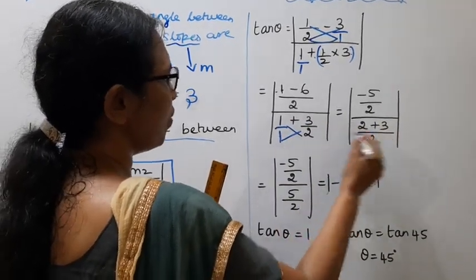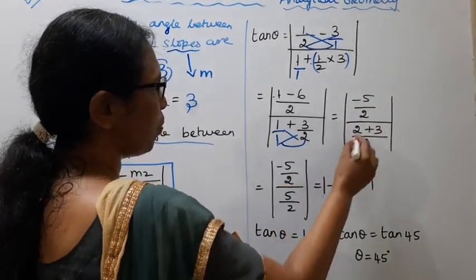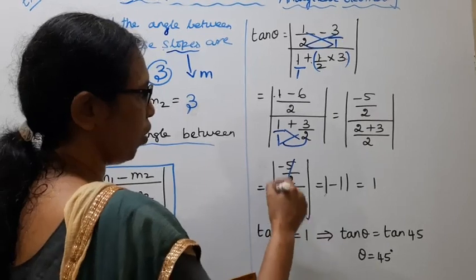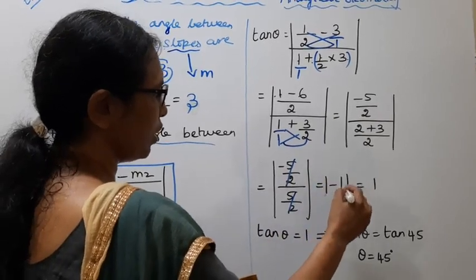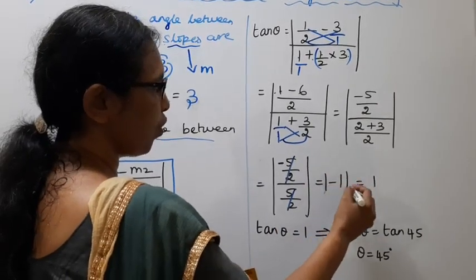Plus 3, divided by 2s are 2. Minus 5 by 2 divided by 2 plus 3 is 5 by 2. 5 by 2, 5 by 2, cancel. That is equal to modulus of minus 1. Modulus of minus 1.